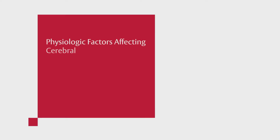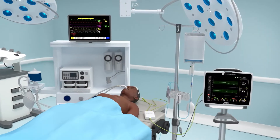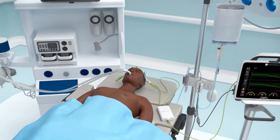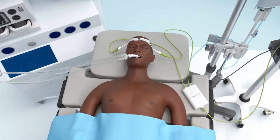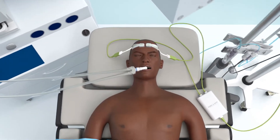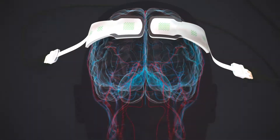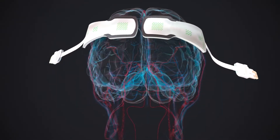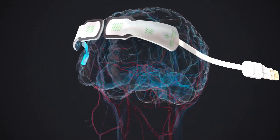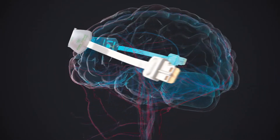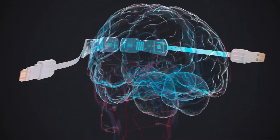Physiologic Factors Affecting Cerebral Tissue Oximetry. Maintaining the brain's balance between oxygen delivery and consumption is critical to promoting brain health. Foresight's NIRS technology uses a five-wavelength near-infrared spectroscopy, which can be used for both cerebral and somatic tissue oximetry. This animation will focus on cerebral tissue oximetry.